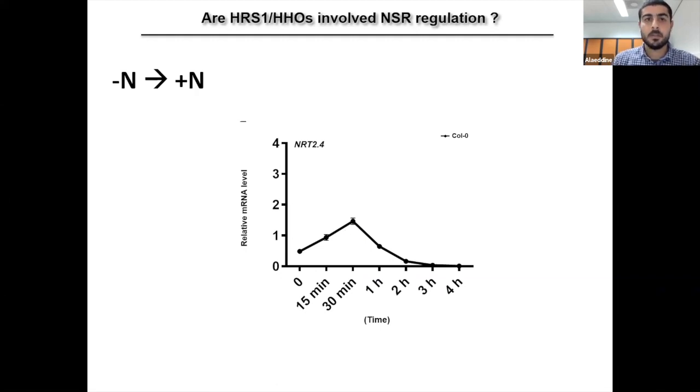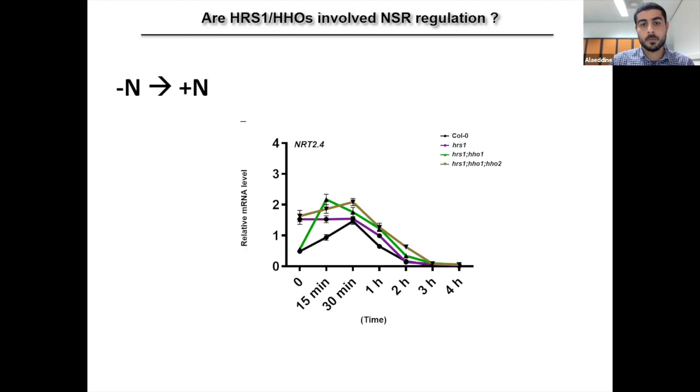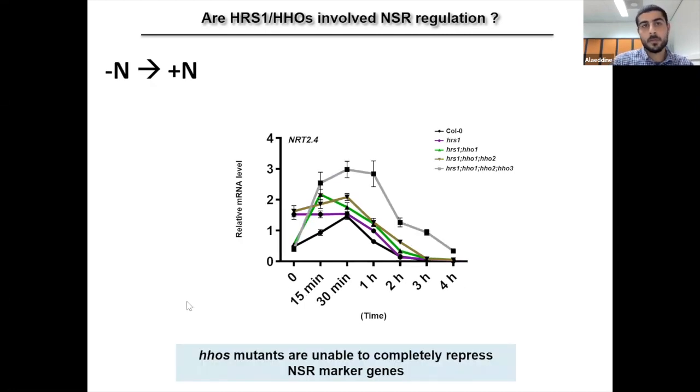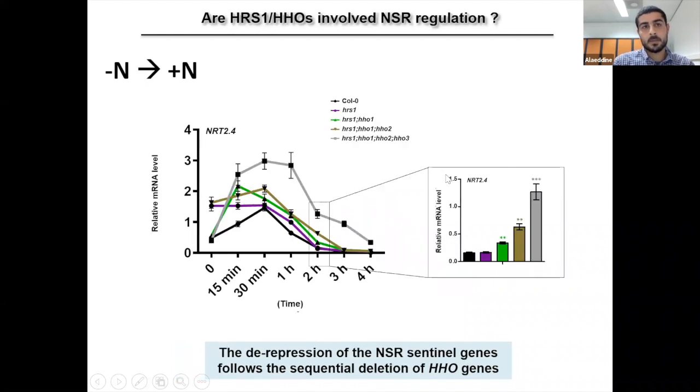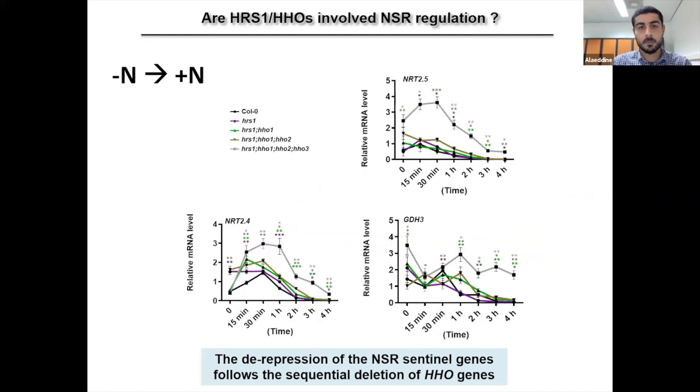So we followed NRT2-4 expression within this time range in the wild type, which is characterized by slight and relatively short induction followed by repression. We also ran in parallel the double, the triple, and also the quadruple mutants. And we found that HHO mutants, specifically the quadruple mutants, are unable to completely repress NRT2-4. We also found that the derepression of nitrogen starvation response sentinel genes follows the sequential deletion of HHO genes, as you can see clearly in this time point at two hours after nitrate application.